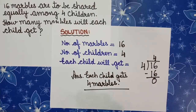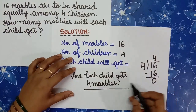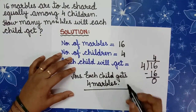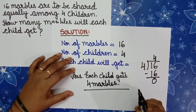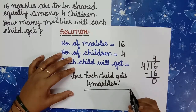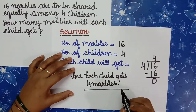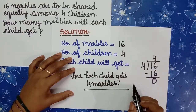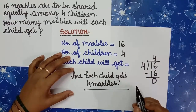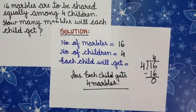So children, hope you understood division sums. Practice it in the book and learn well the multiplication tables from 2 to 15. Thank you and God bless you.